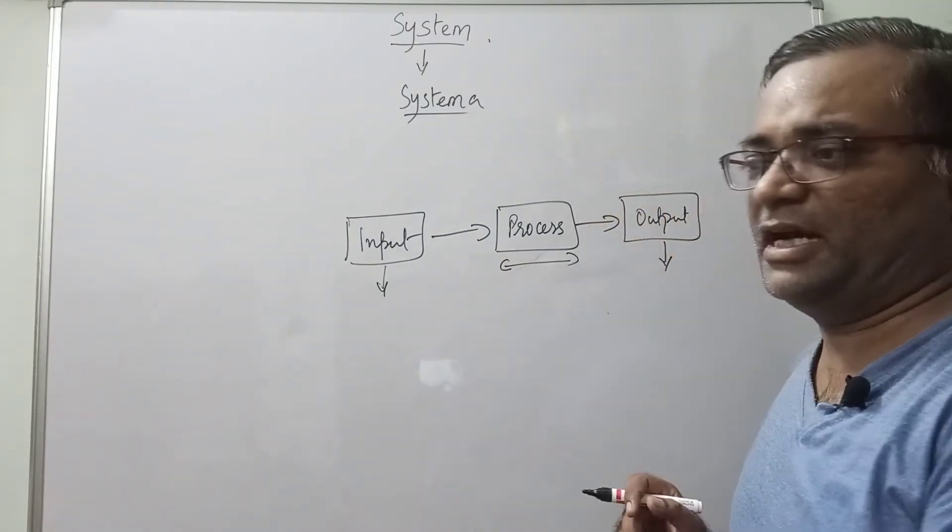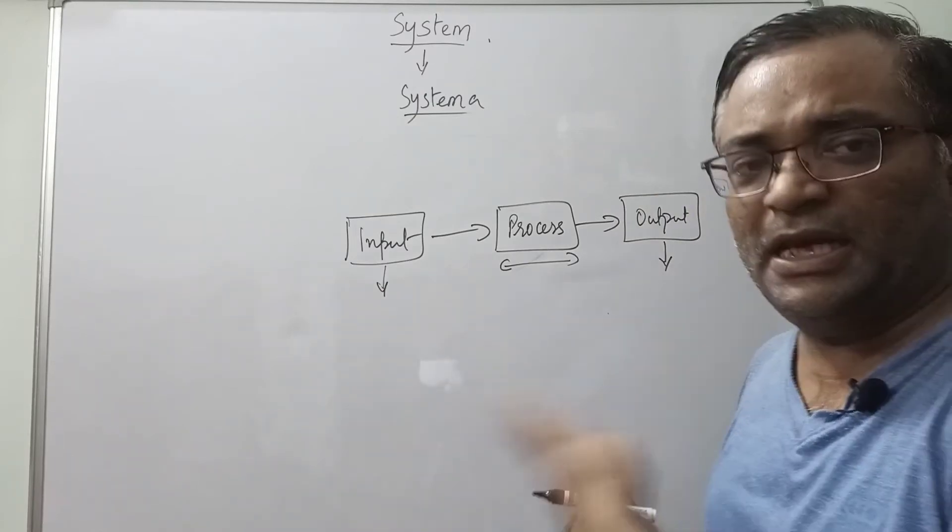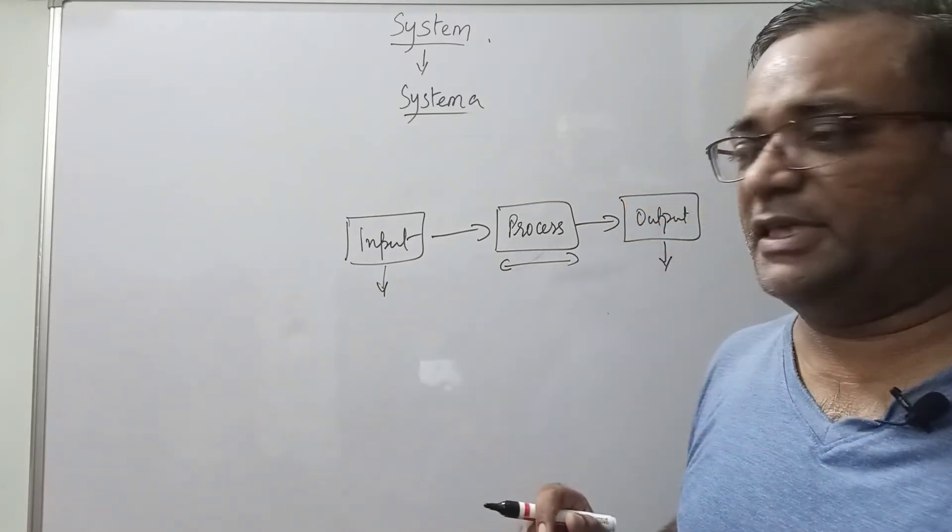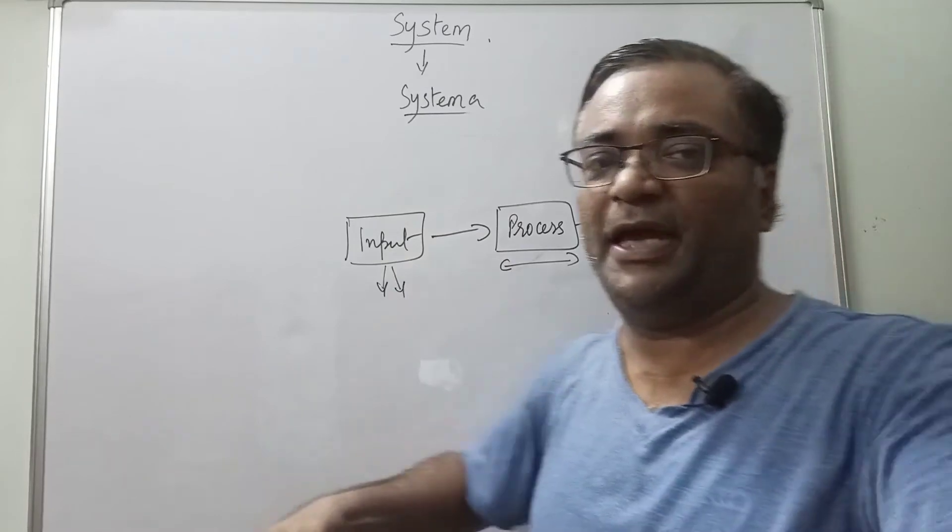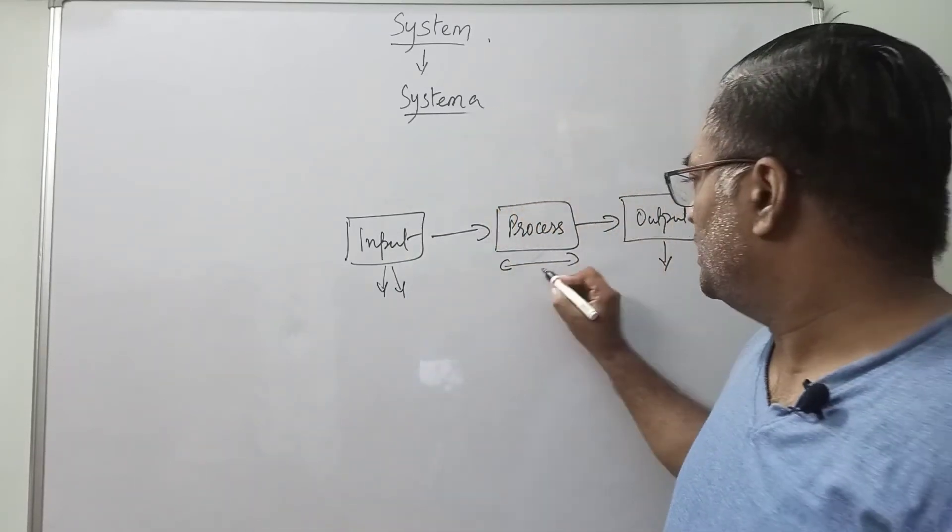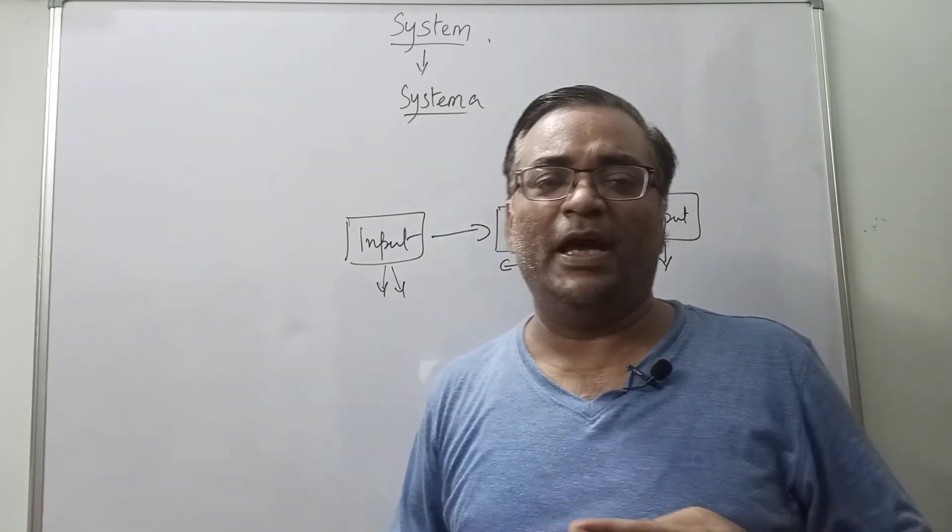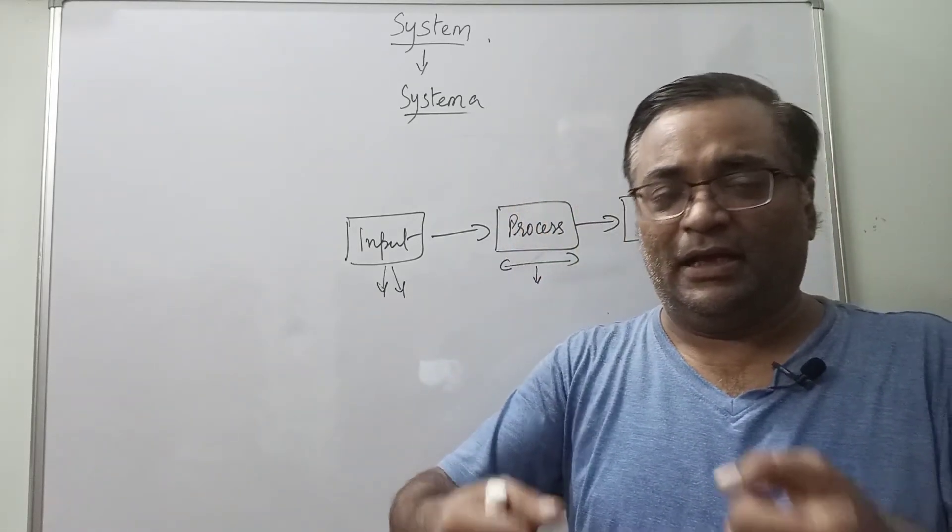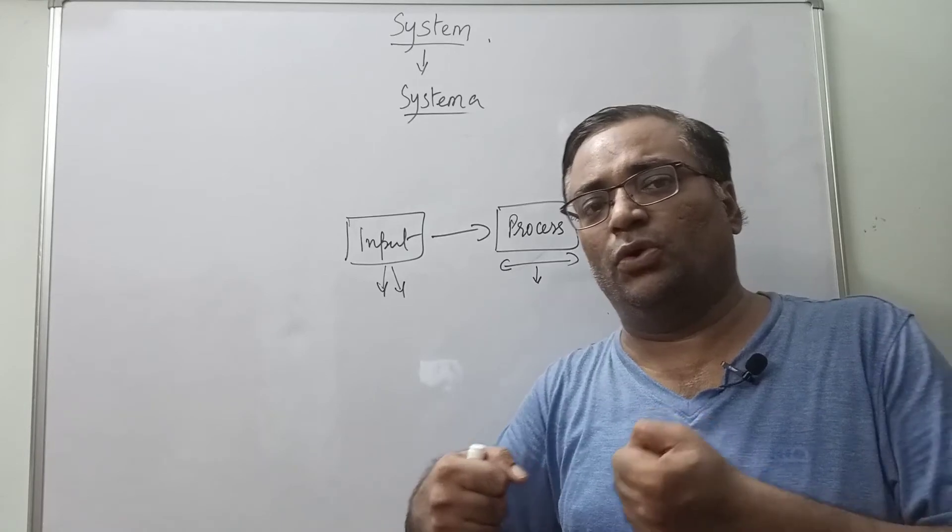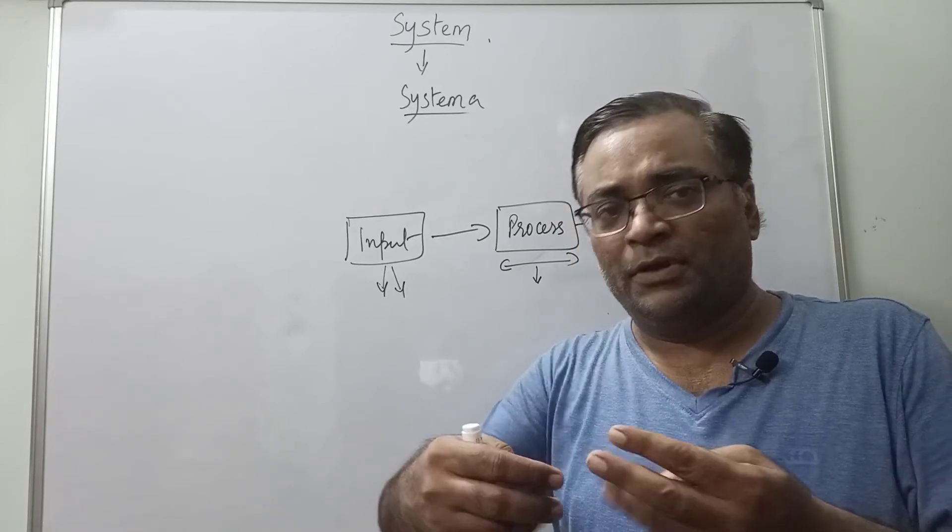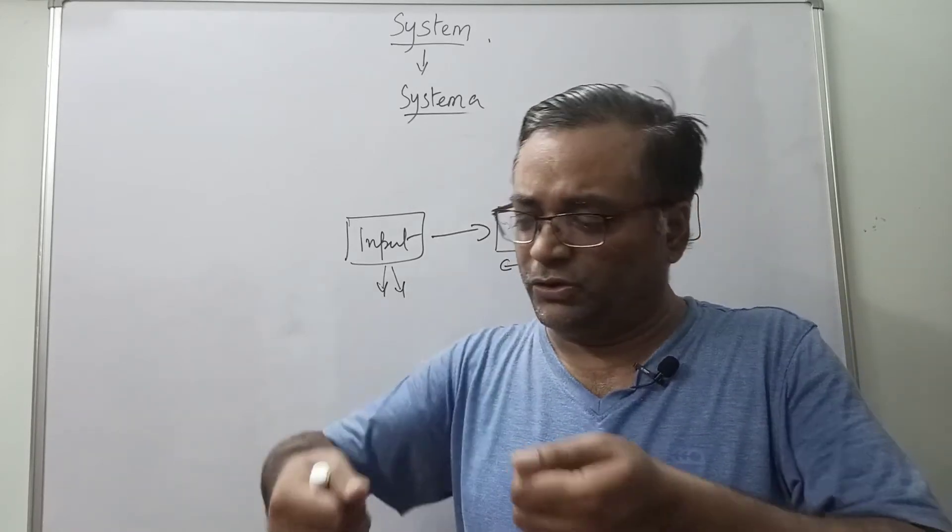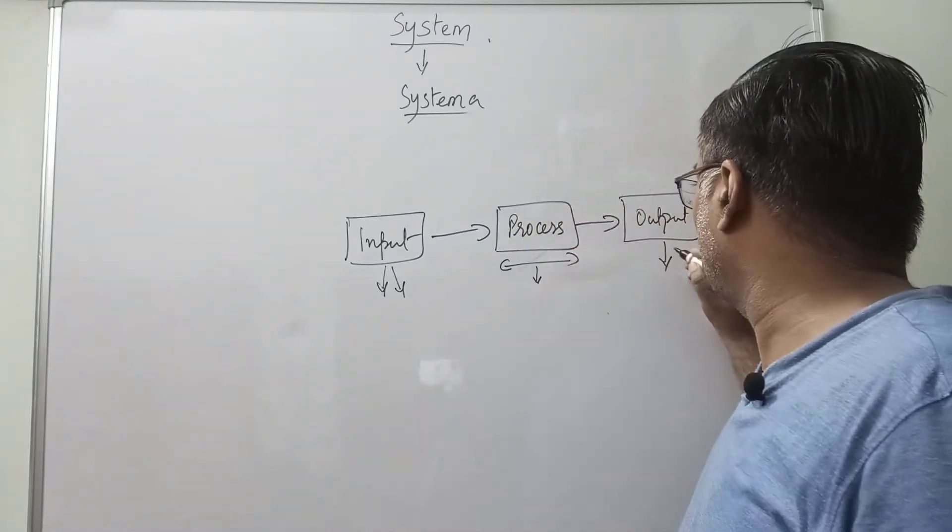Then what happened in the process? The chain moved, giving displacement of cycle from one place to another. Then when I had to stop, I applied the brakes. The process was the rotatory motion had to stop, pulling back. When it was pulling back, then what happened? The output was the cycle stopped.